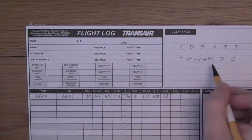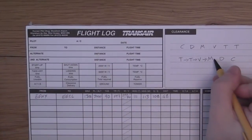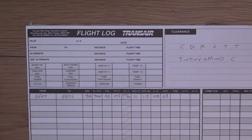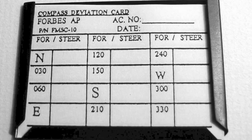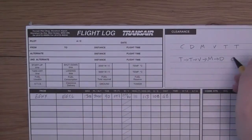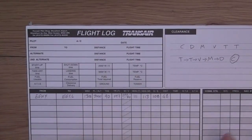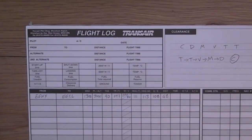That gives us our magnetic heading of 113. In the aircraft, we'd then look at the deviation card — that card on the compass that nobody knows what it's for. We can apply the deviation noted on that card, perhaps a couple of degrees, and that would finally give us our compass heading. But at this stage of planning, because we don't know which aircraft we're in, we stop the calculations and use 113 as our magnetic heading.